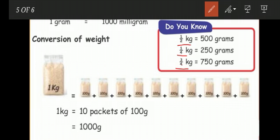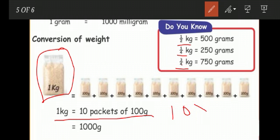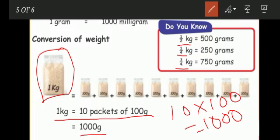Now you see the conversion of weight. See they give a 1 kilogram rice pack. That 1 kilogram rice pack we split into 10 packets of 100 grams. So we can write 1 kilogram equals 10 packets of 100 grams, which means 10 into 100. 10 into 100 means 1000 grams. We already studied about multiplication also.